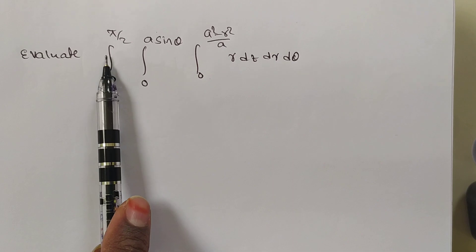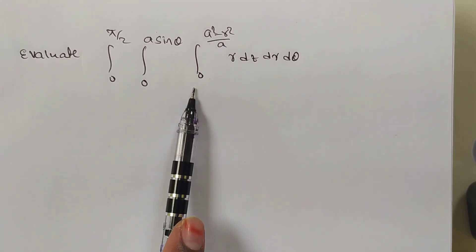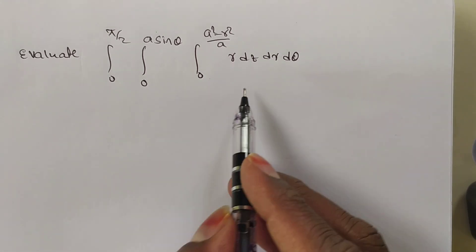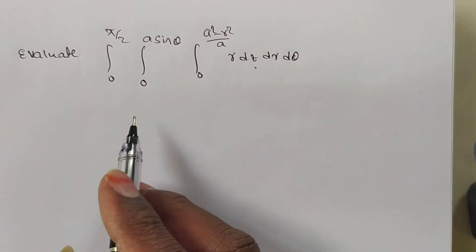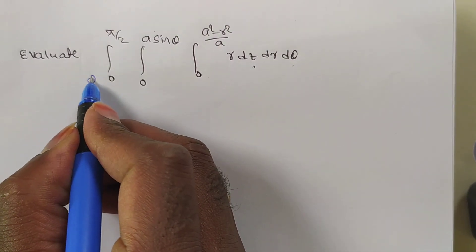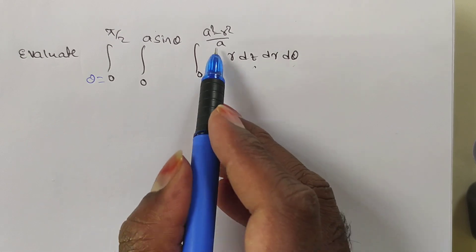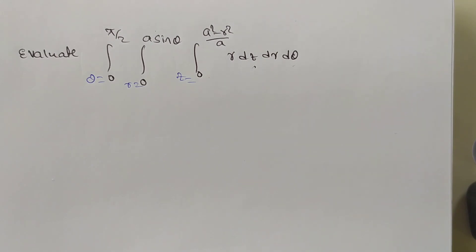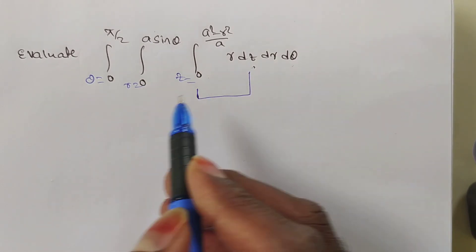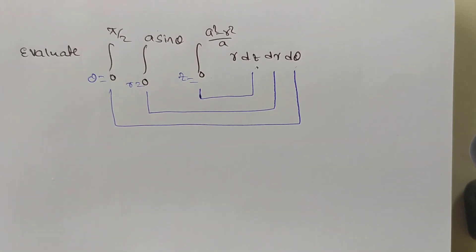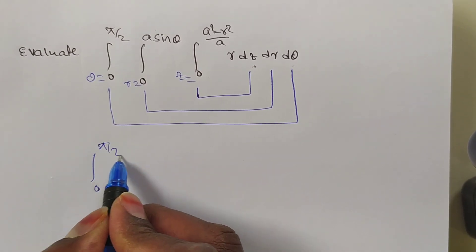Here we are given the integral from 0 to π/2, integral 0 to a sinθ, integral 0 to √(a²−r²)/a, of r dz dr dθ. The variables are z, r, and θ. The limit 0 to π/2 is for θ only. The remaining limits — 0 to a sinθ — are for r, and 0 to √(a²−r²)/a is for z. We have to find and solve with these limits.